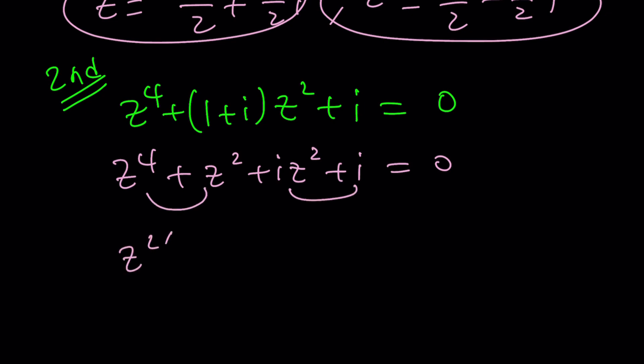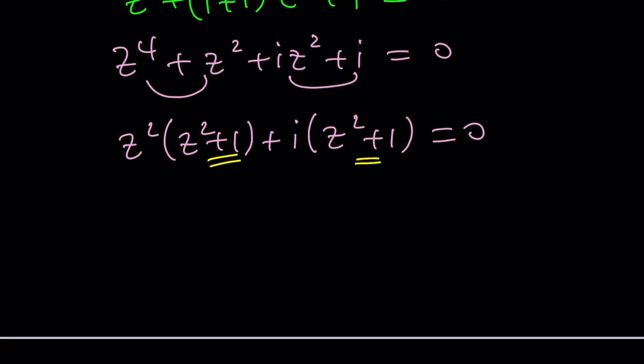And I'm going to factor this by grouping these two and those two. Factor out z squared, you're going to get z squared plus 1. Factor out i z squared plus 1. Uh-oh, we got a common factor. Nice. Let's go ahead and take it out. We have now z squared plus 1 as a common factor. And the other factor is formed by these two, which is z squared plus i equals 0. By the way, you could also replace z squared with something like w and still do the same factoring. It will be the same thing pretty much. Okay? Factoring by grouping.